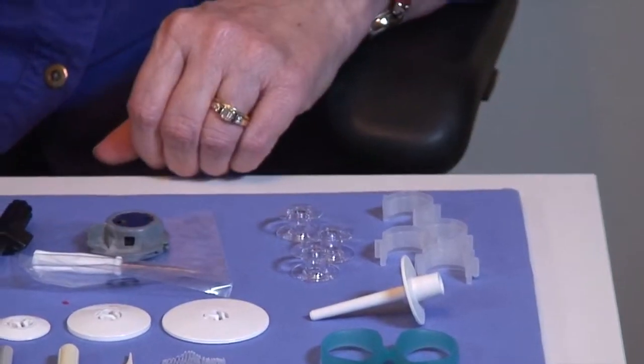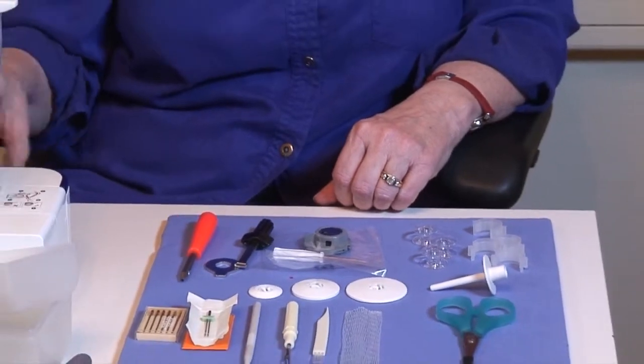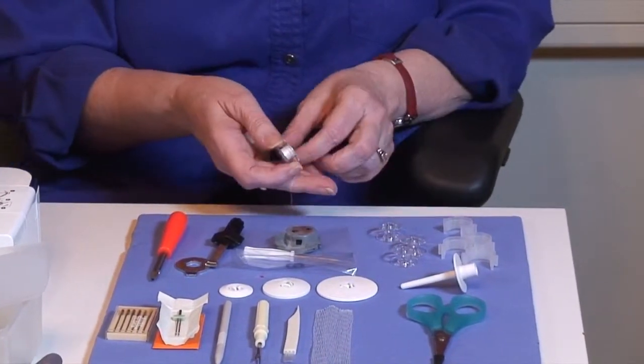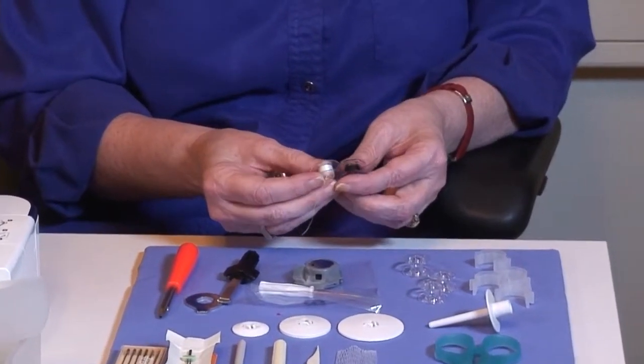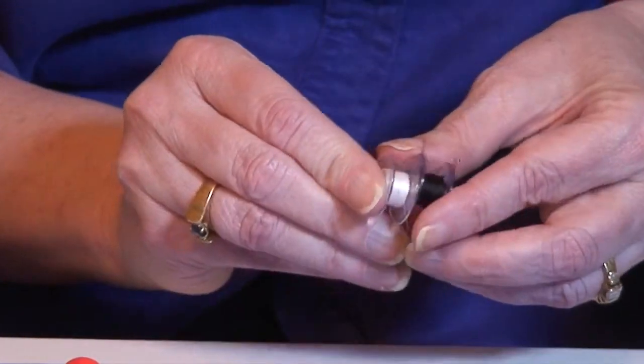Now I want to point out about the bobbins is that you want to make sure that you get the right size bobbins. These are class 15 bobbins and the other common size of bobbin is a size L. They're the same diameter but they're different thickness.